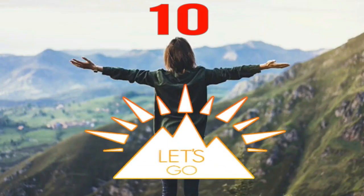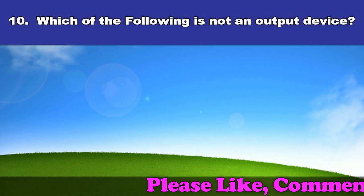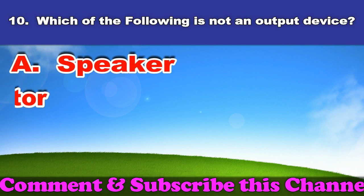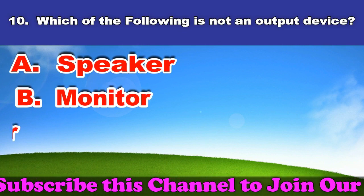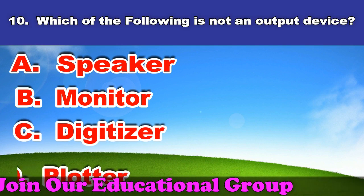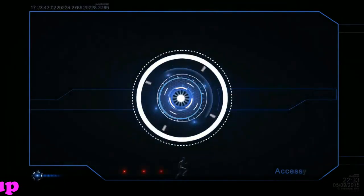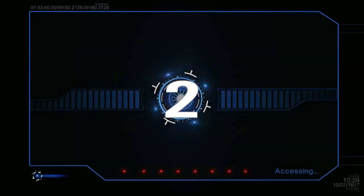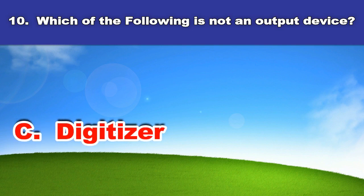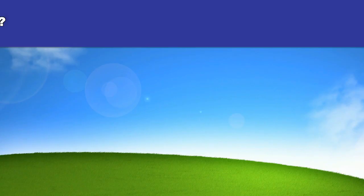Tenth question: Which of the following is not an output device? A. Speaker. B. Monitor. C. Digitizer. D. Plotter. And the answer is digitizer.